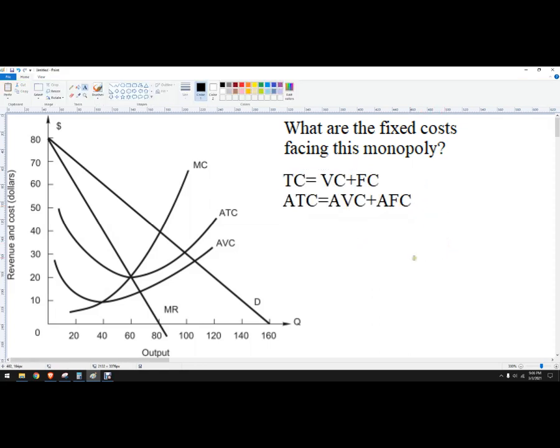So in this problem, we know what the average total cost is for a given quantity. We know what the average variable cost is for a given quantity. And if we multiply those by quantity, then we'll get what we can solve for fixed cost.